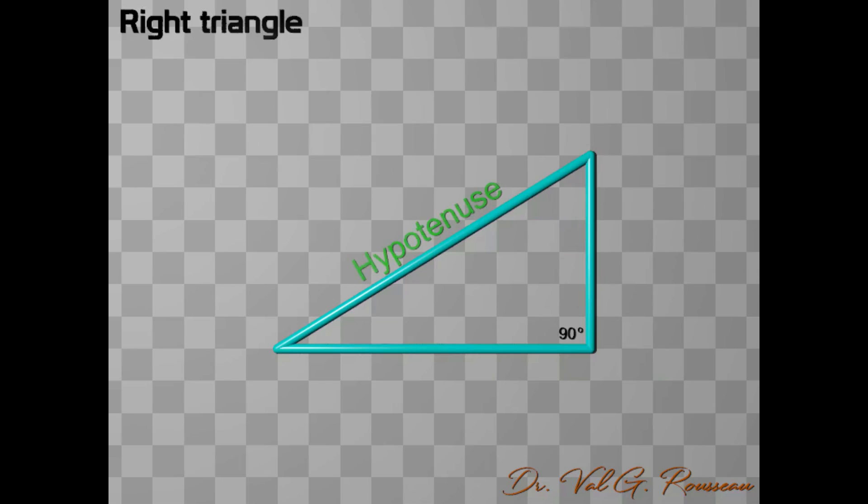The longest side of a right triangle is called the hypotenuse. Now let us call alpha one of the two remaining angles, for example, the one on the left. In the following, this will be our angle of interest.